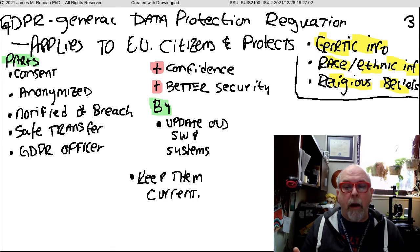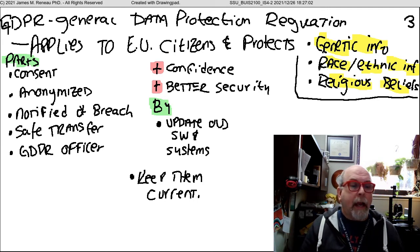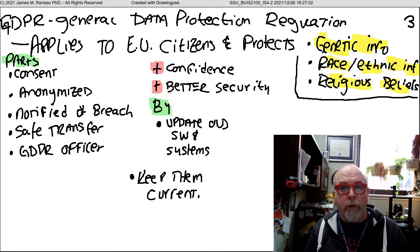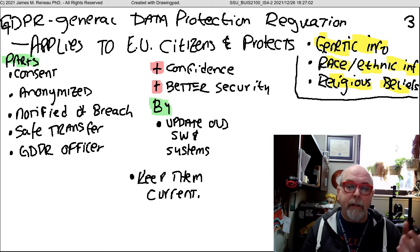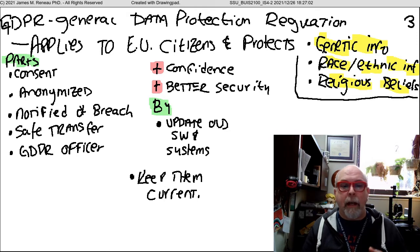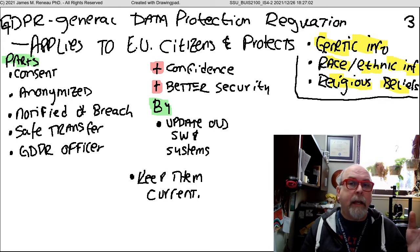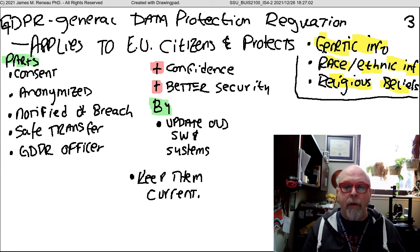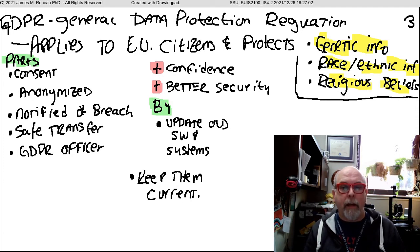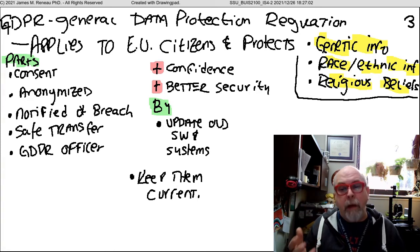The GDPR requires that if you're transferring data from one entity to another, it must be done safely or encrypted. Every entity online must have a GDPR officer — some individual responsible for GDPR actions. What it does is create confidence and better security, forcing companies to really address security from start to finish in their online business, updating old software and writing current systems that do things right. If your systems are current, your chance of a breach is maybe a little reduced.